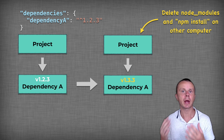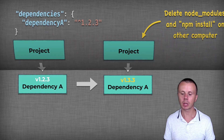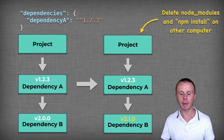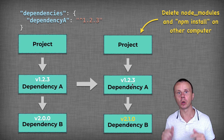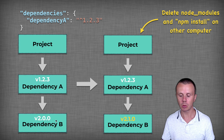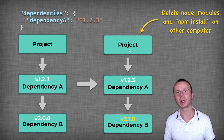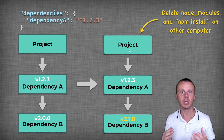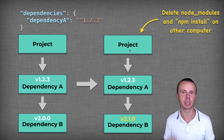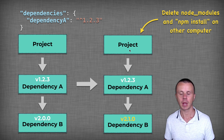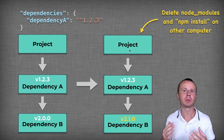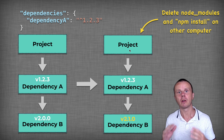So that is a problem. In that example, the version of a direct dependency was changed. Let's look at another example. Here, dependency A's version was not changed, but it has its own dependency — dependency B — and the version of that dependency was changed from 2.0.0 to 2.1.0. In our case, if we have just one package.json file, it doesn't even list dependency B — that is listed in the package.json of dependency A. And in this example, problems may also arise because different versions of dependencies are being used.